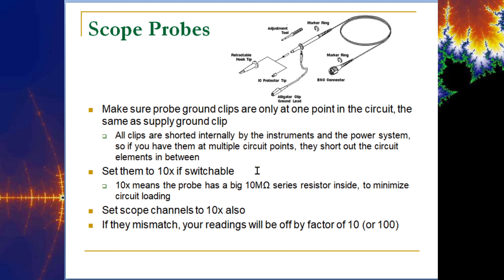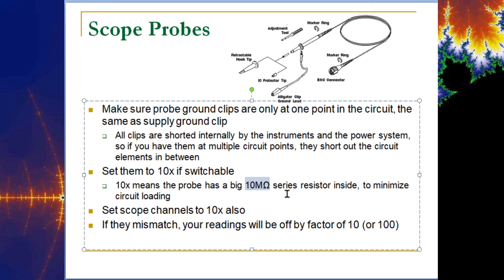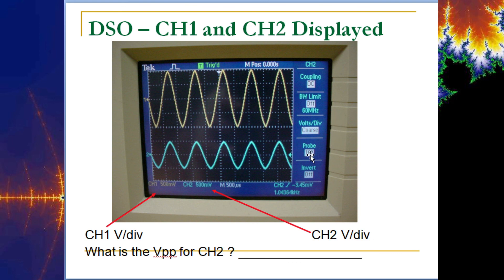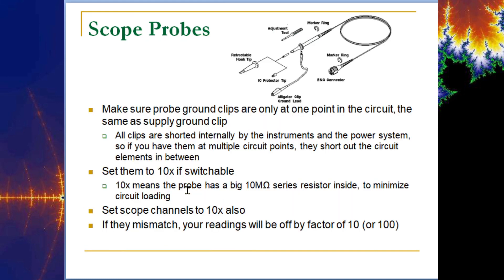Most probes are switchable — they may be a 10x or 100x probe. The 10x setting means the probe has a large 10 MΩ series resistor inside to minimize circuit loading and protect the oscilloscope. This scales the signal down internally. If you have the switch set to 10x, you must set the corresponding channel menu to 10x as well. If the probe switch and the menu setting don't match, your readings will be off by a factor of 10 — a 5V signal might read as 50V.